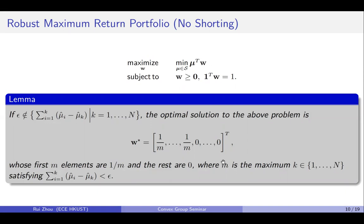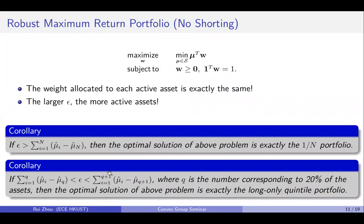Here the m is decided by the uncertainty level epsilon. The lemma tells us that the weight allocated to each active asset is exactly the same and the larger uncertainty level, the more active assets. So now we know that the 1/N portfolio is only a special case of the optimal solution to this problem if the uncertainty level is sufficiently large. And the long-only quintile portfolio is also a special case of its optimal solution when the uncertainty level is within this range.